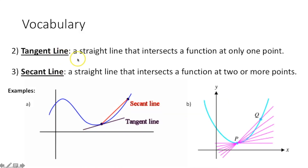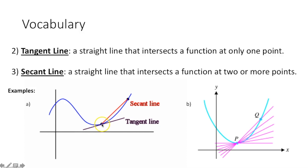The second vocabulary term is tangent line. That is a straight line that intersects a function at only one point. On the other side of that would be a secant line, which is a straight line that intersects a function at two or more points. Here you can see our function in blue, and the tangent line intersects that blue function at only one point — right at the tip of this curve.